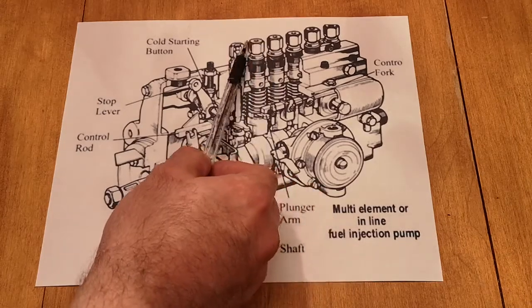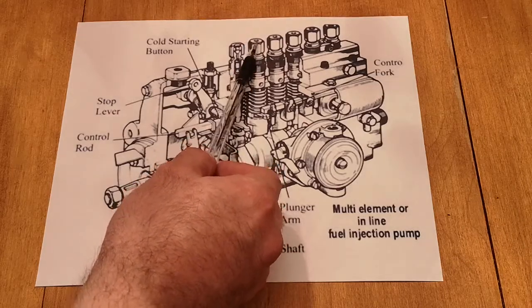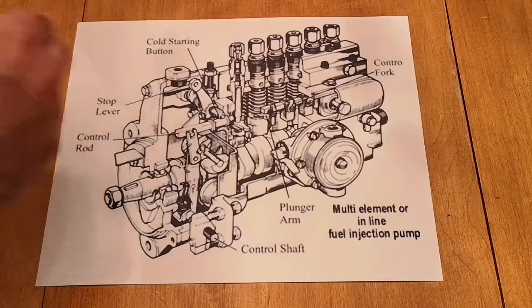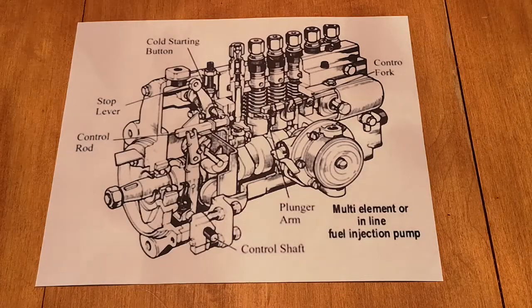And this is where that equal-length heavy-walled seamless steel tubing would be. It would come out there and go to its respective injector or its respective cylinder.